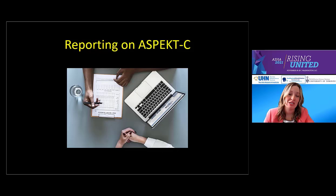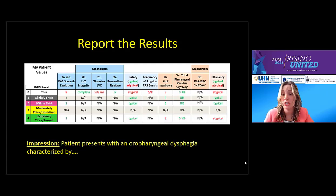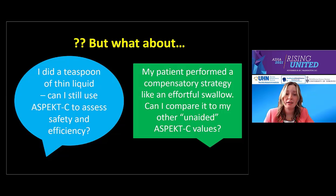When we see patients for fluoro and do ASPECT-C, we find charting results in a table followed by an impression statement to be concise and clear and to allow easy comparison in subsequent reports. It's important to note that ASPECT-C does not spit out recommendations regarding diet texture or consistency, nor should it. Only you, with all the clinical knowledge gathered about your patient, can make those recommendations.